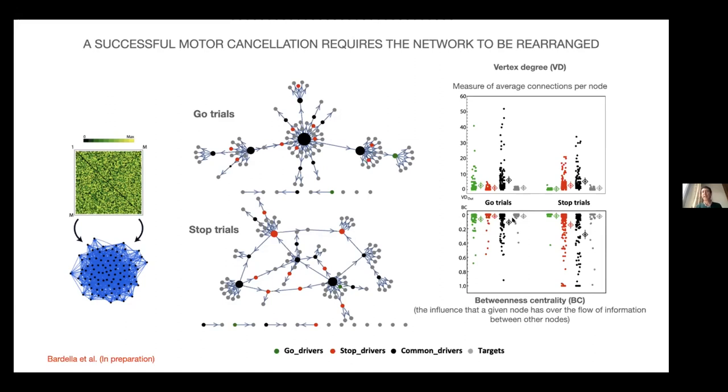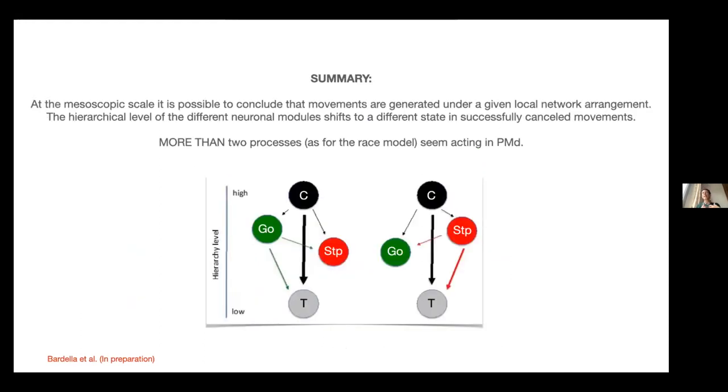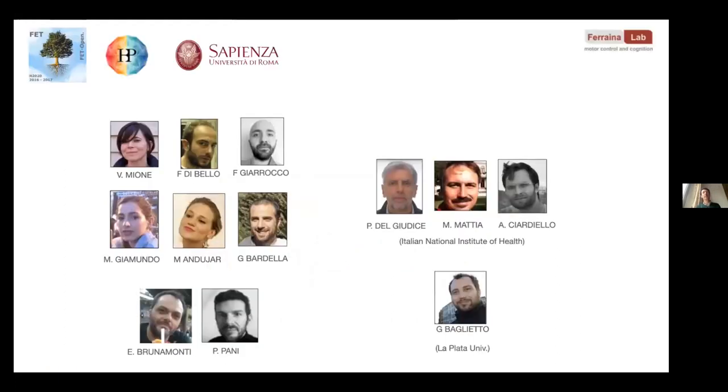By using measures of this graph approach like the vertex degree and the betweenness centrality—that I have no time to go into, but they are measures of average connections per node, the first, and the influence that each node is providing to the other nodes—we've been able to condense everything in this figure here presented. This suggests that when movement is executed, the hierarchical level of the modules are higher for the common and the go drivers. When the stop is instead successfully determined, there is a change and this change moves to a higher hierarchical level the stop units and the stop modules recorded at the mesoscopic level.